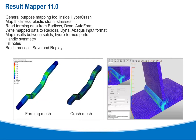Result mapper 11.0 is a general purpose mapping tool inside Hypercrash that can map thicknesses, plastic strain, and stresses. It can read forming data from Radioss, Dyna, and Autoform, and write mapped data to Radioss, Dyna, and Abaqus input format. It maps results between solids and hydroformed parts, handles symmetry, fills holes, and provides a batch process to save and replay.